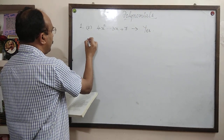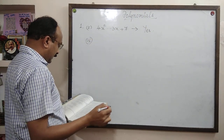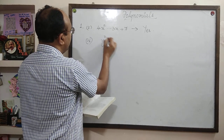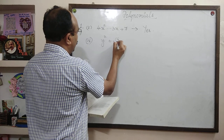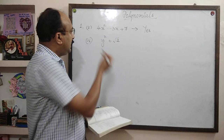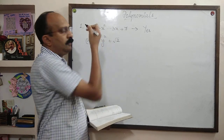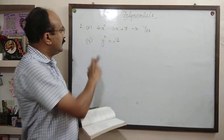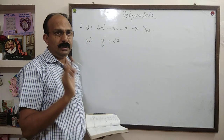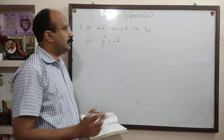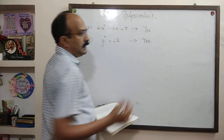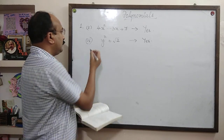Number 2: it is also a polynomial in one variable, because the variable is y and the power is 2. Since 2 is a positive integer, this is also a polynomial in one variable.